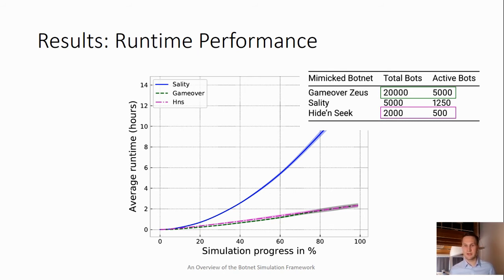We also want to point out that with a strong processor and a lot of time you could simulate even Hide and Seek with more bots, but it may degrade to the point where the simulation takes longer than real time — so 50 days of simulation might take 70 days of real time.